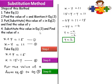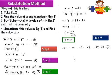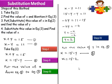Now substitute this value of y in equation 3. This is step 4 — put the value of y in equation 3. Equation 3 is x is equal to 15 minus y. In place of y we put 2, so x is equal to 15 minus 2, which gives x is equal to 13.